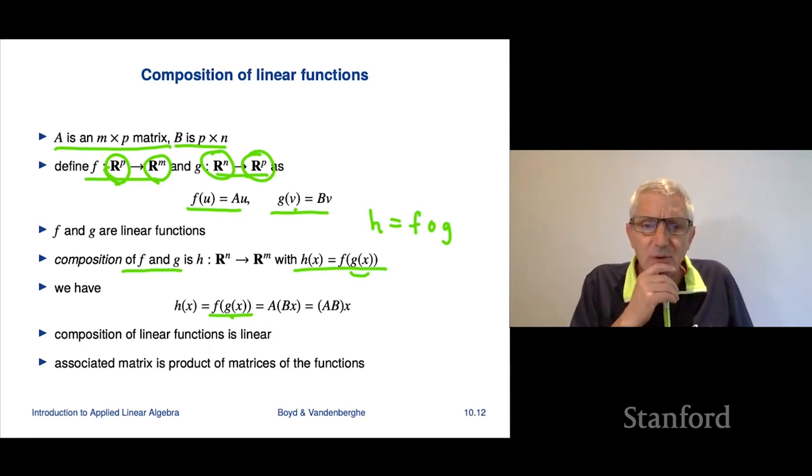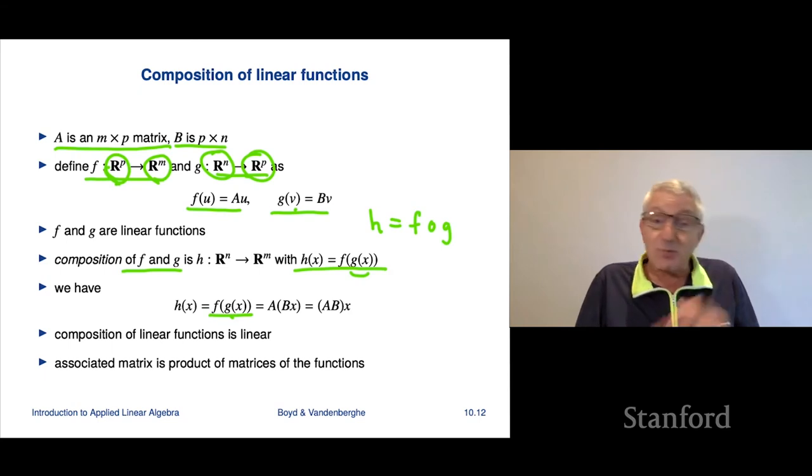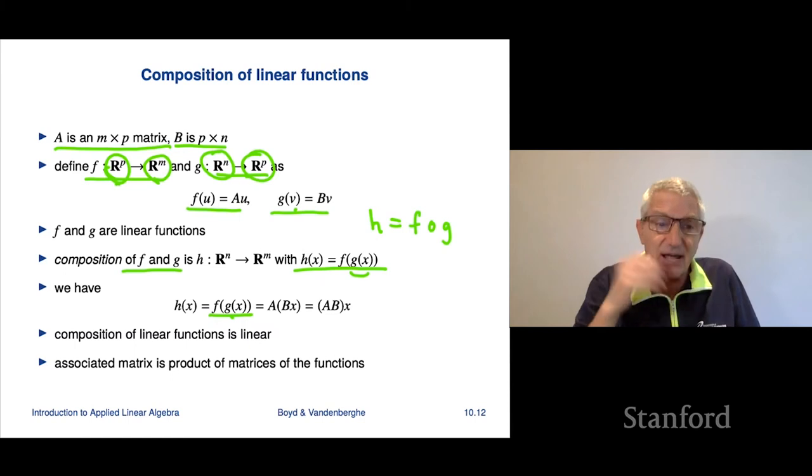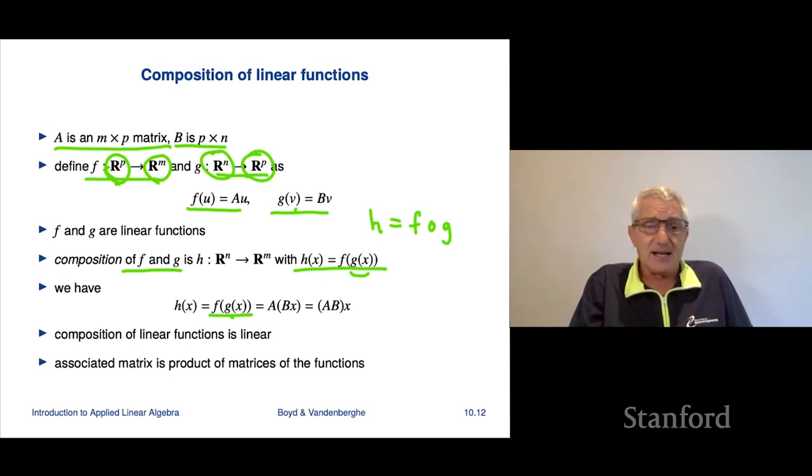One thing I should note here is a bit, I should note this and I'll say it. So basically it says matrix multiplication is composition of linear functions. There is one weird thing here and I thought I would mention it.